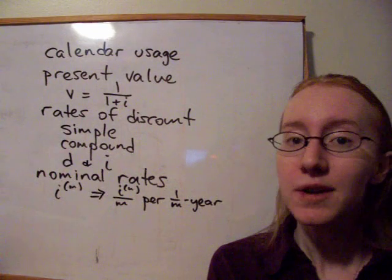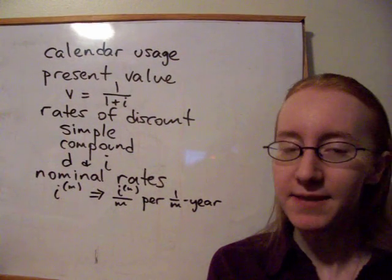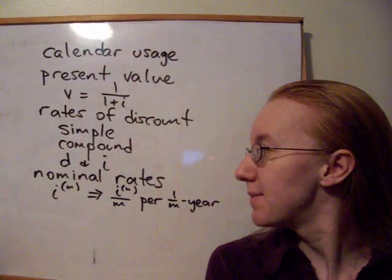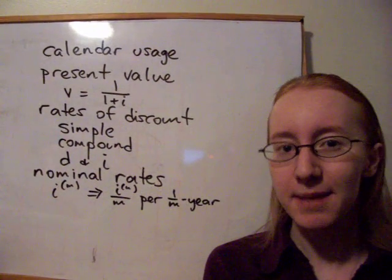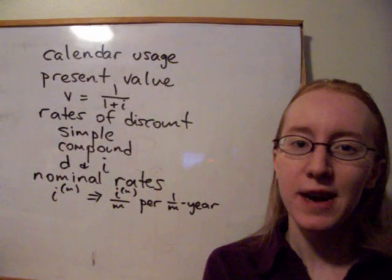And there are also nominal rates of discount. They work in a very similar manner. D upper M would mean a discount rate of D upper M over M per 1 over M of a year.